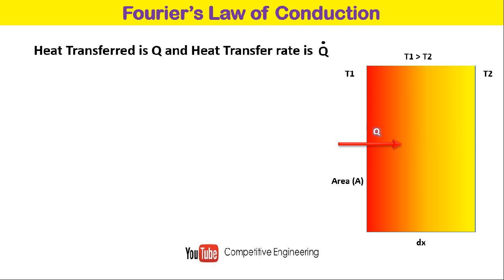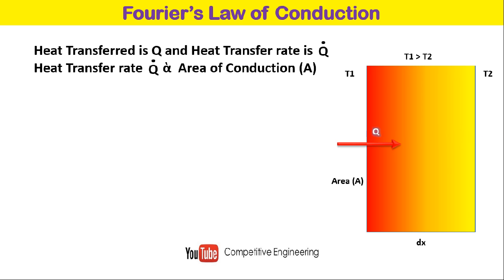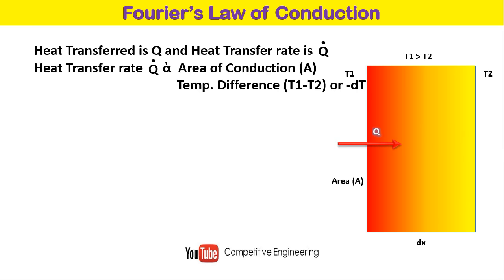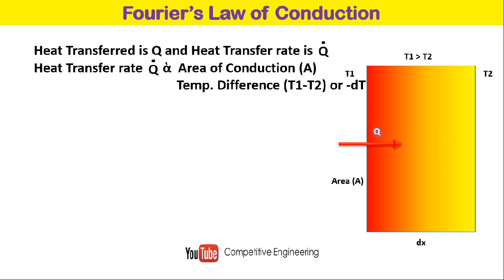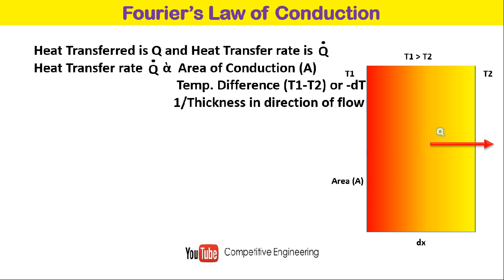Fourier's law of conduction states that the heat transfer rate Q dot is directly proportional to the area of conduction A and the temperature difference T1 minus T2, which we can denote as minus dT. Here dT is T2 minus T1, so minus dT gives T1 minus T2. Q dot is also inversely proportional to the thickness in the direction of flow.